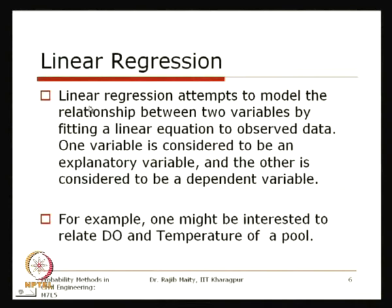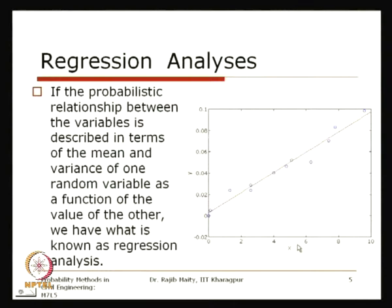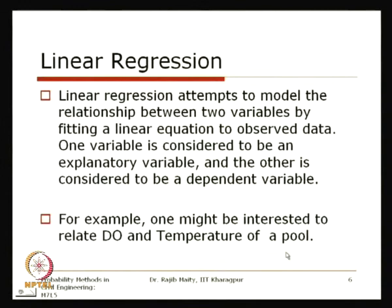Linear regression attempts to model the relationship between two variables by fitting a linear equation to the observed data. One variable is considered the explanatory variable and the other the dependent variable. Variable x is used as the independent variable and y is the target variable. It can be the other way around too — if we estimate x with respect to y, we say x is regressed on y; otherwise y is regressed on x.